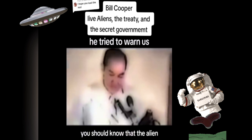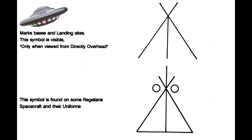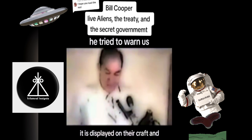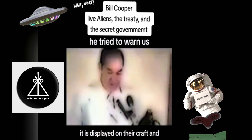The alien flag is known as the trilateral insignia. It looks like a teepee with two circles on either side and one pole running straight down the middle. It is displayed on their craft and worn on their chest on their uniforms.